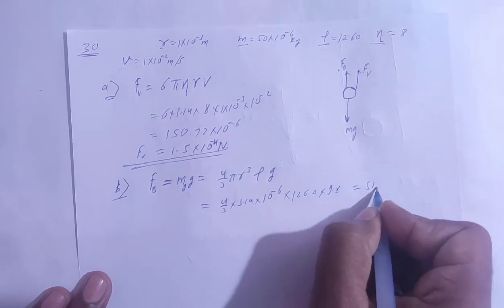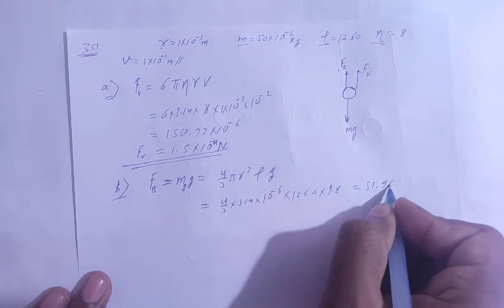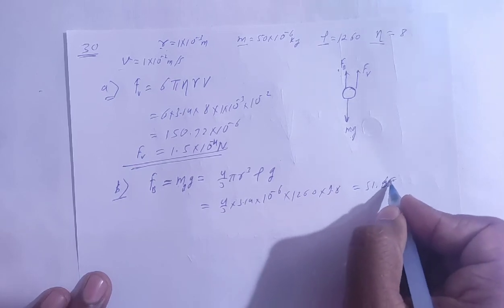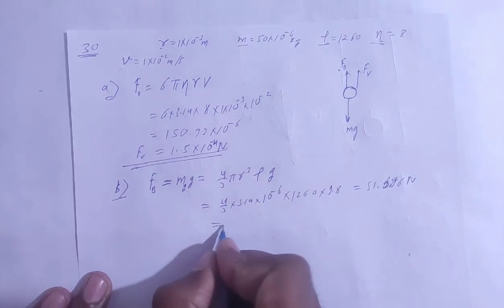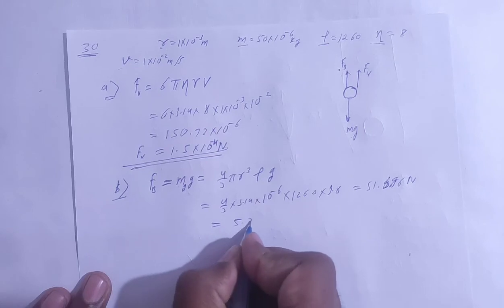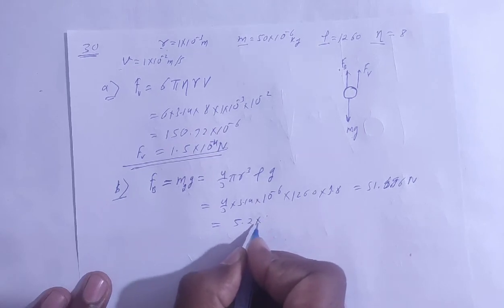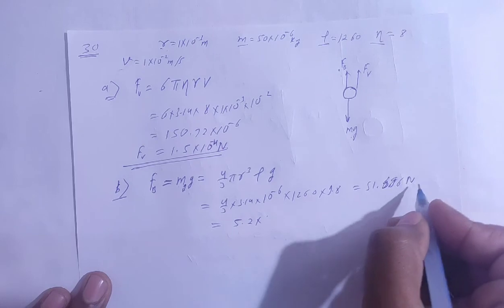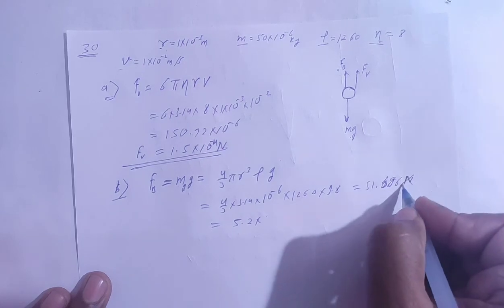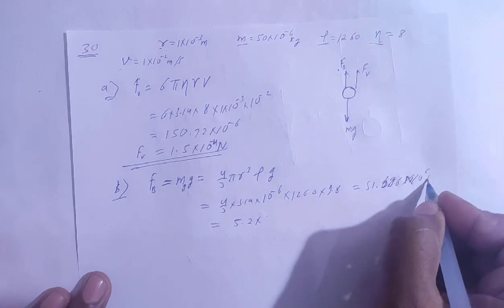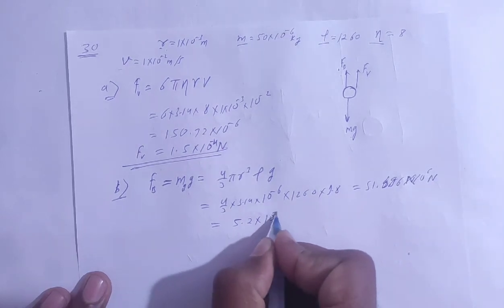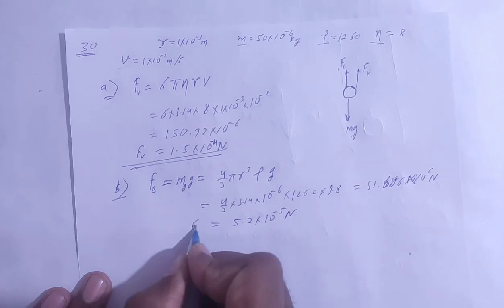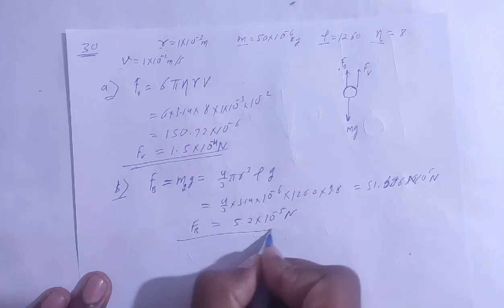Solving this gives approximately 5.2 × 10⁻⁵ Newton. This is the buoyant force.